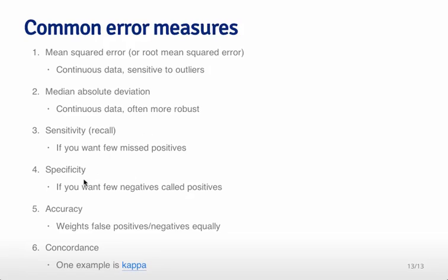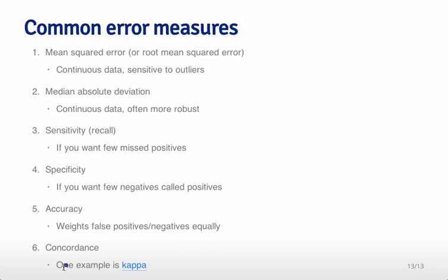Sensitivity and specificity are very commonly used for medical tests, and especially when you care about one type of error more than another. Accuracy weights false positives and false negatives equally, which matters if you have a large discrepancy in the number of positives versus negatives. For multi-class cases, you might use something like concordance or kappa — there's a large class of distance measures, each with different properties, that can be used with multi-class data. Those are some of the common error measures used when doing prediction algorithms.